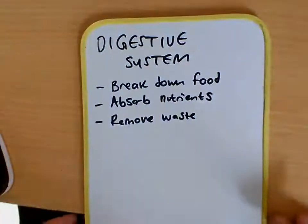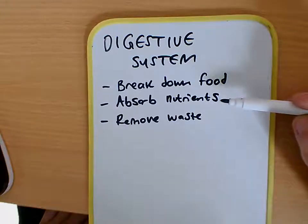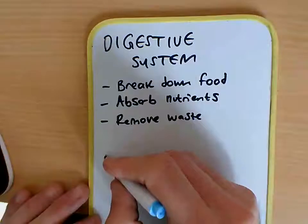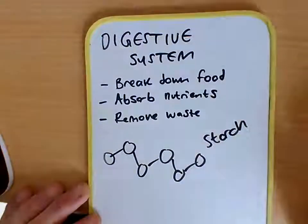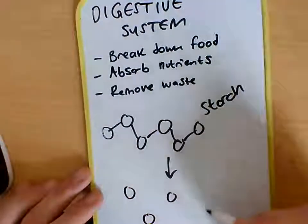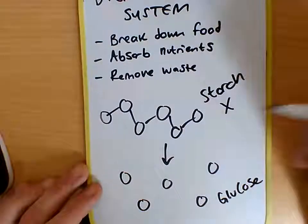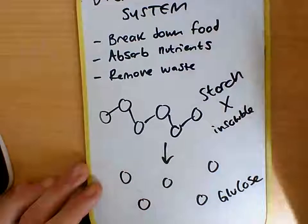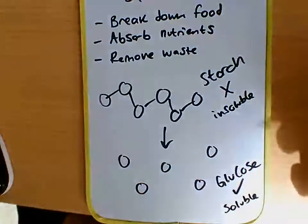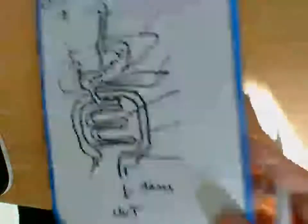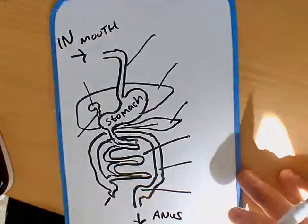The digestive system really has three main jobs: it breaks down food, absorbs nutrients, and then removes waste. So you've got these big insoluble molecules like starch, and we have to break them down into the individual glucose molecules that we can actually absorb. Starch is insoluble, but if we break it down it becomes soluble and is easier to absorb.